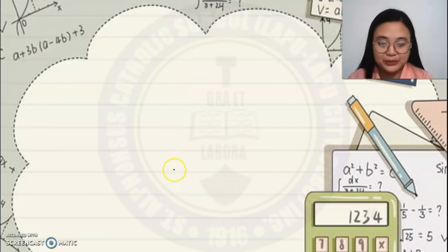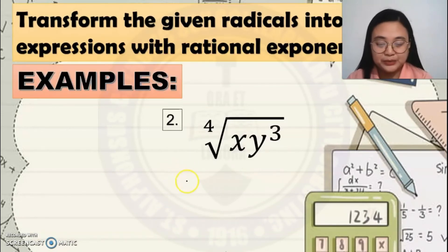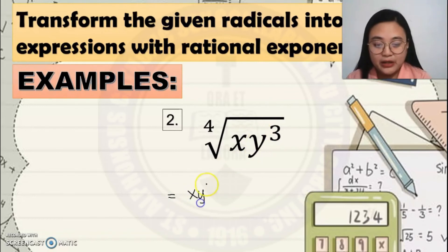Next example. This one. First that you're going to do, you copy. It will become X, Y cube, and put that inside the parenthesis, then raised to the power of 1 fourth. That would be the final answer.